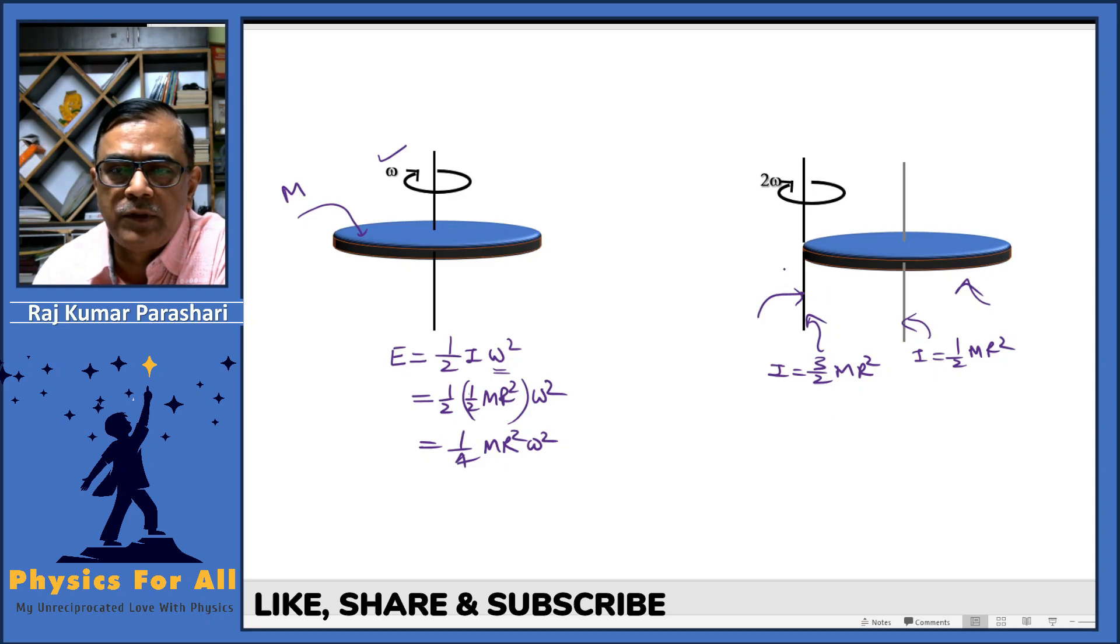Now the rotational kinetic energy about this axis, E', should be 1/2 I' omega^2, which equals 1/2 * 3/2 M R^2, and the omega is 2*omega, so this equals 4 omega^2.